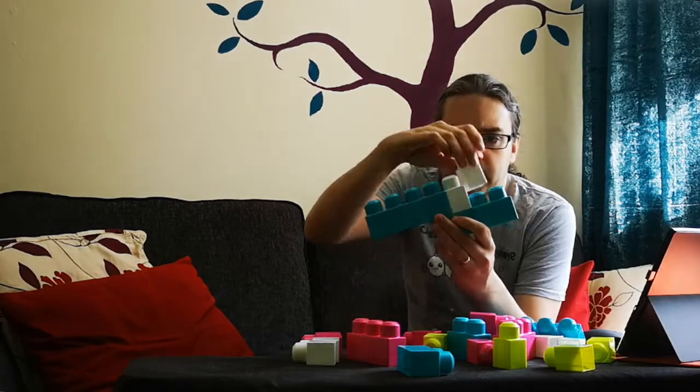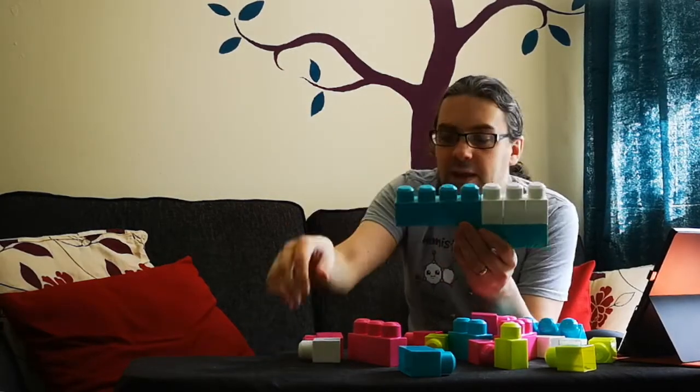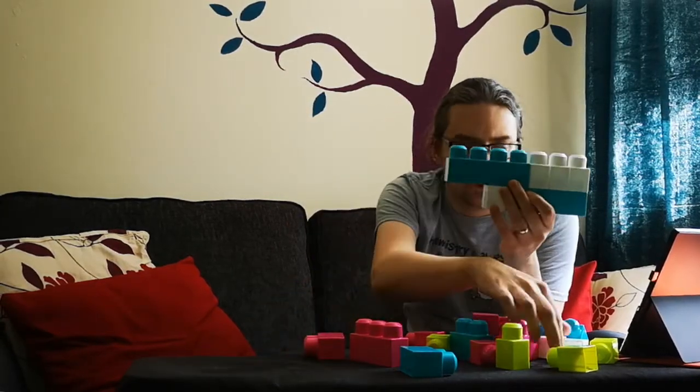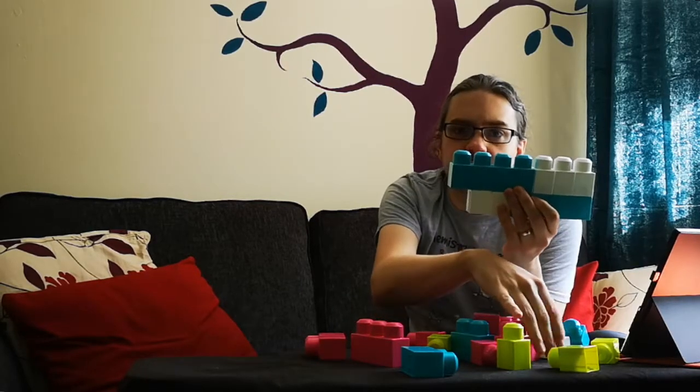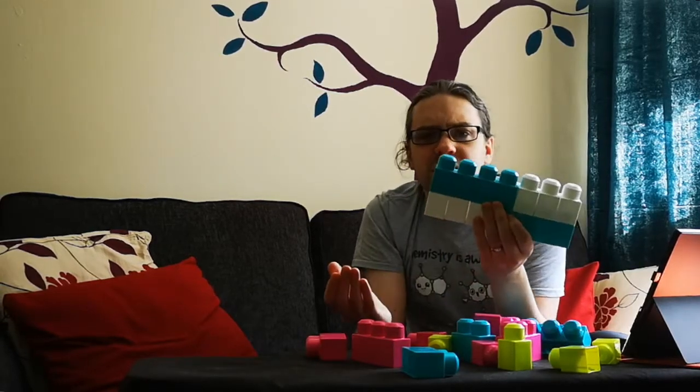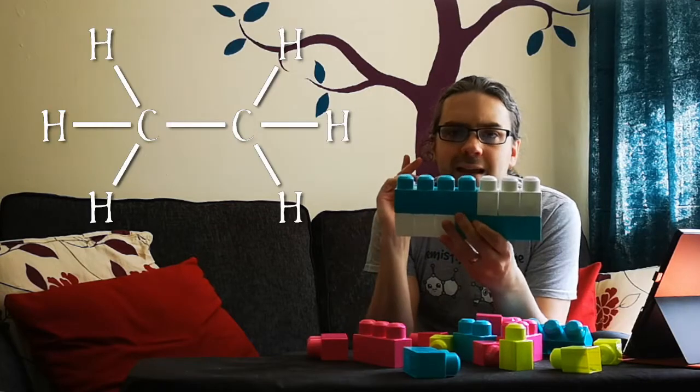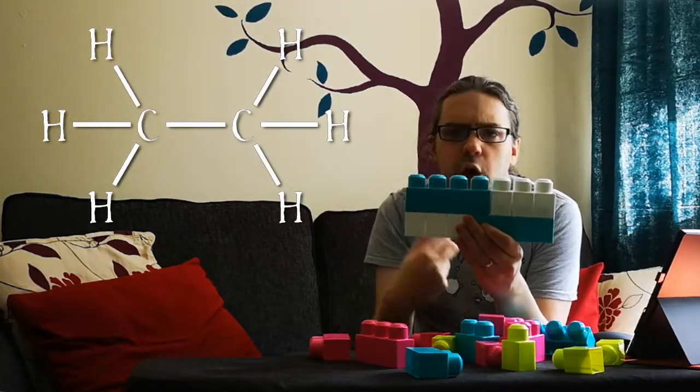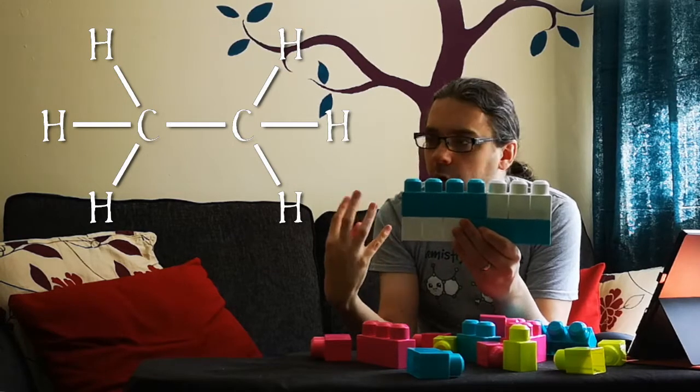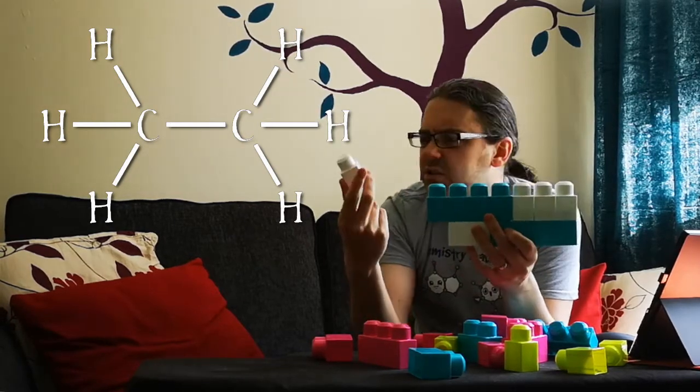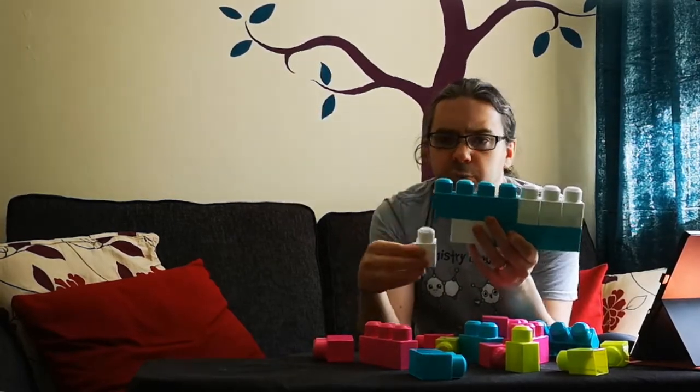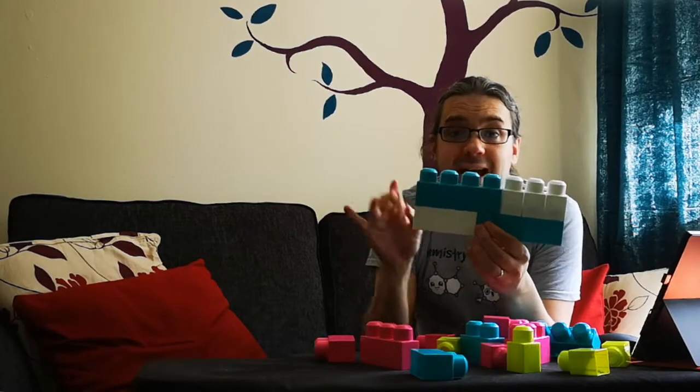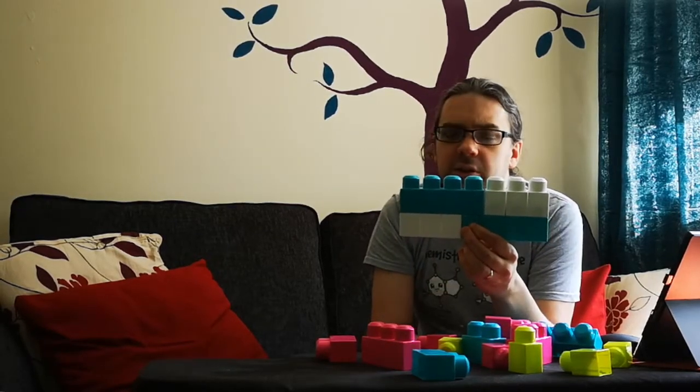So if I stick two of these blue bricks together there are six remaining slots and these can be filled with six white studs and this is a representation of a very simple molecule, ethane. Each blue block has four slots just like the carbon atom which can bond to four other atoms, and the single studs are like hydrogen which can only bond to one other atom and easily fill up the spare slots that are left over.